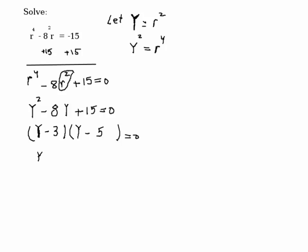y - 3 = 0, so y = 3. Or y - 5 = 0, so y = 5.